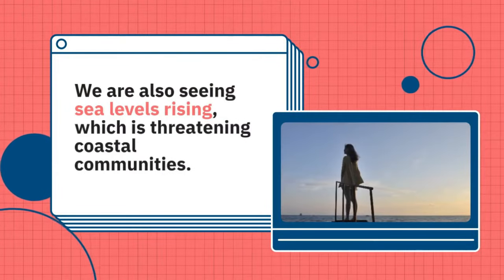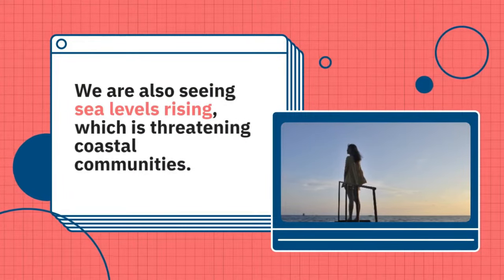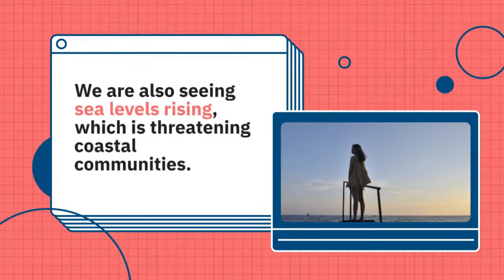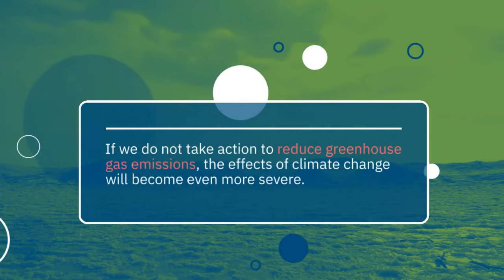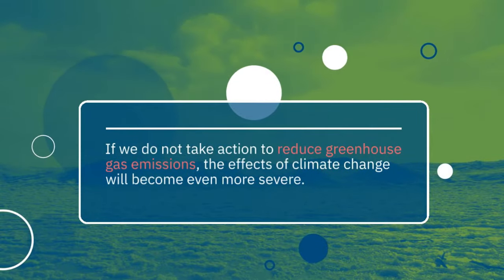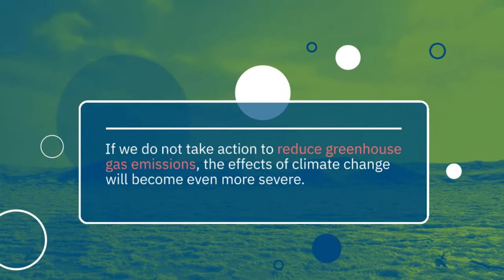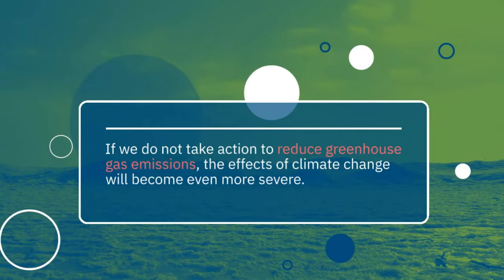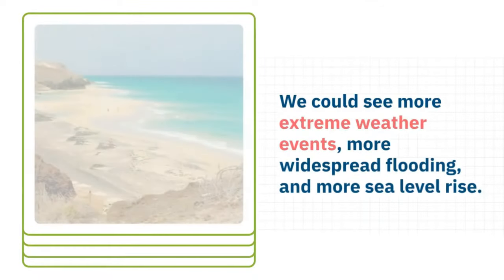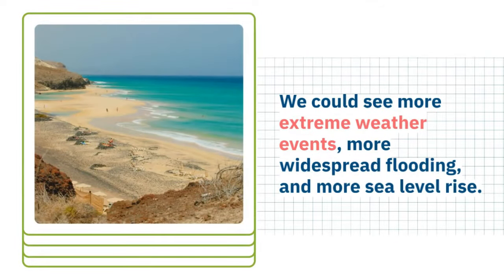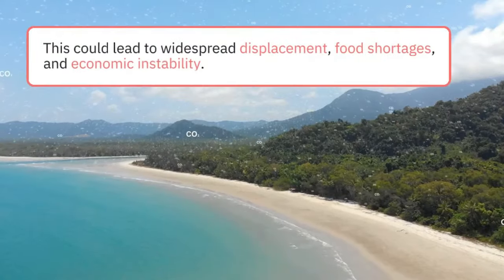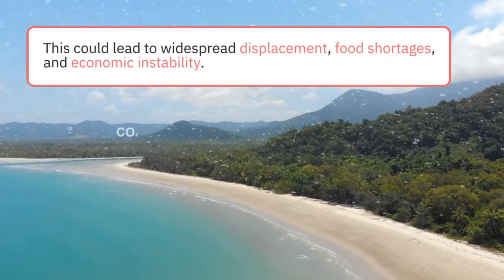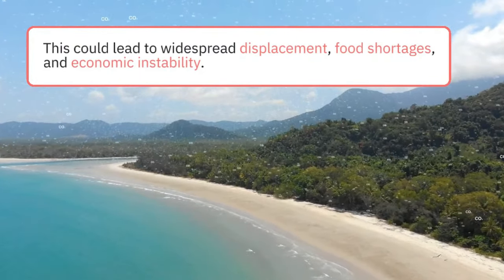We are also seeing sea levels rising, which is threatening coastal communities. If we do not take action to reduce greenhouse gas emissions, the effects of climate change will become even more severe. We could see more extreme weather events, more widespread flooding, and more sea level rise. This could lead to widespread displacement, food shortage, and economic instability.